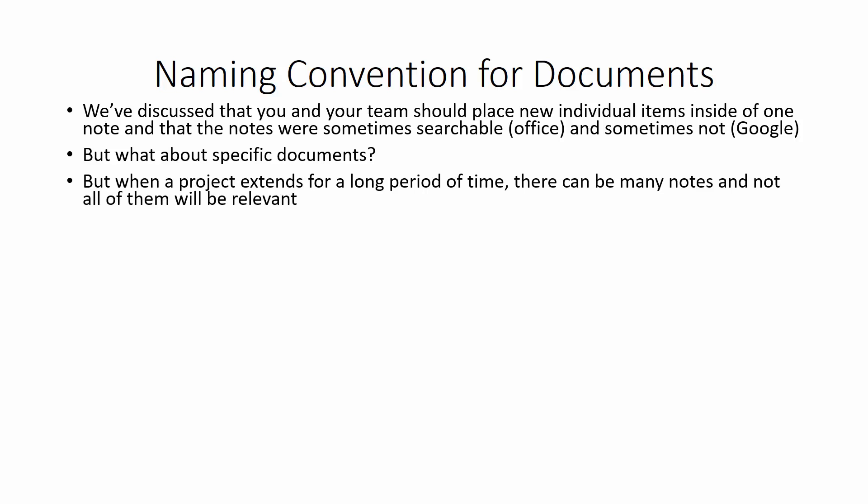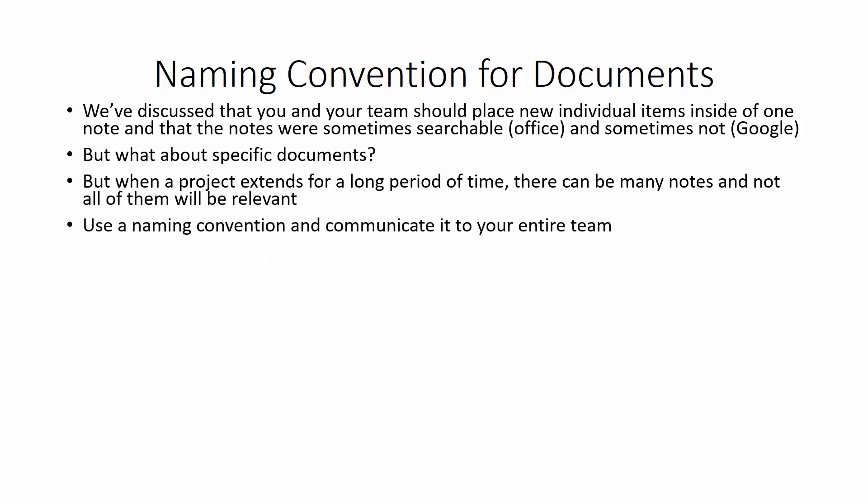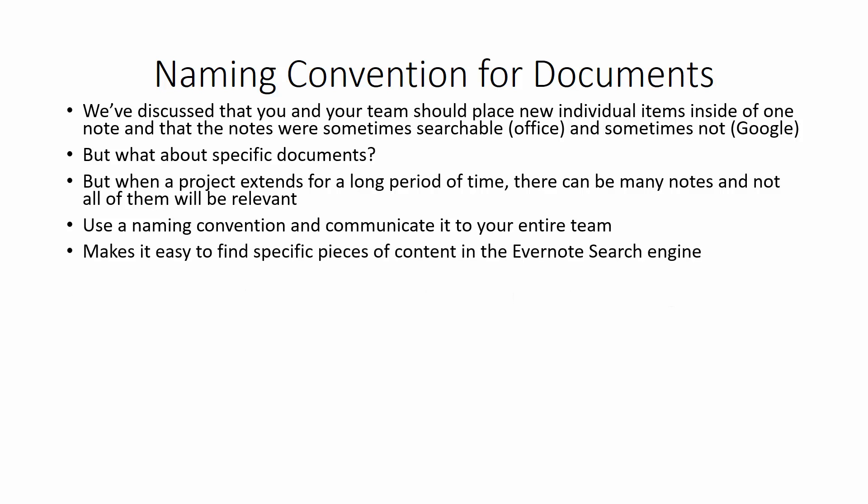This is important because when a project extends for a long period of time, you can have a lot of notes and not all of them will be relevant. It can actually clog the search when you're trying to find something specific. What you want to do is to use a naming convention for the individual files within the note, and then make sure that you communicate that naming convention to your entire team. This will make it easy to find specific pieces of content within the Evernote search engine.